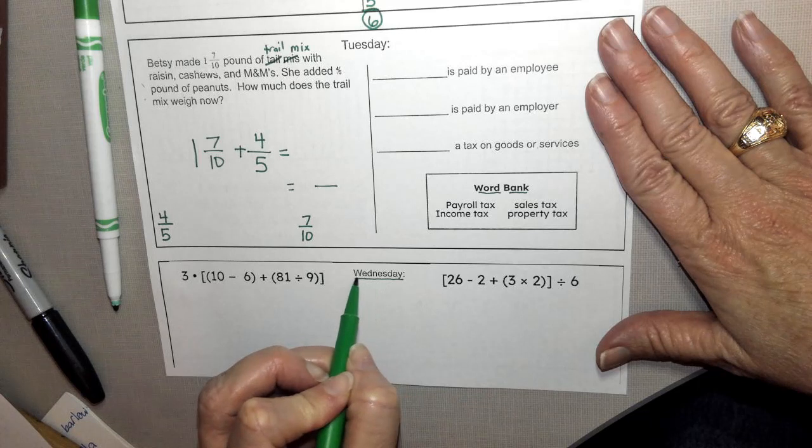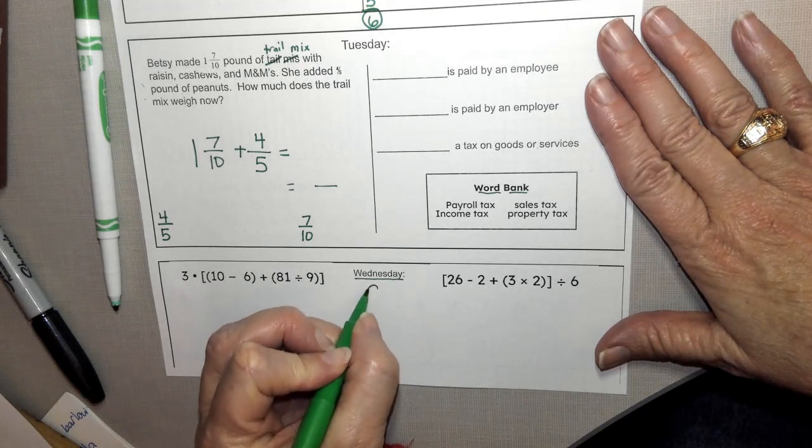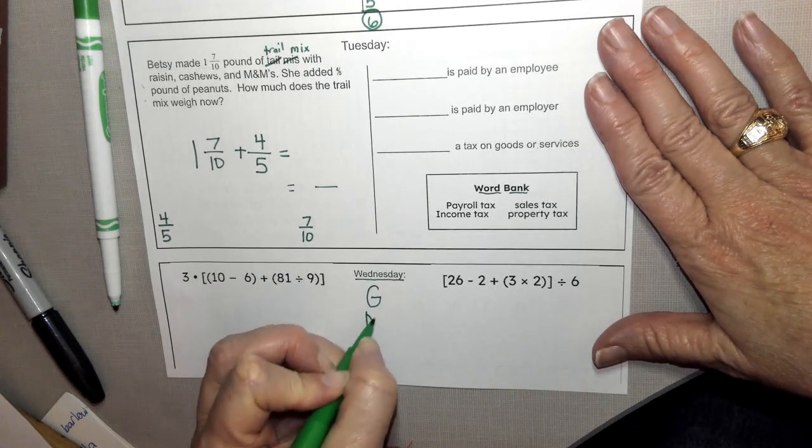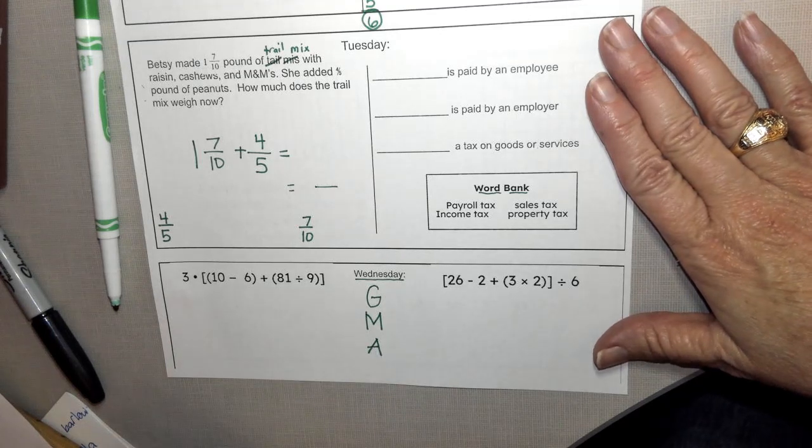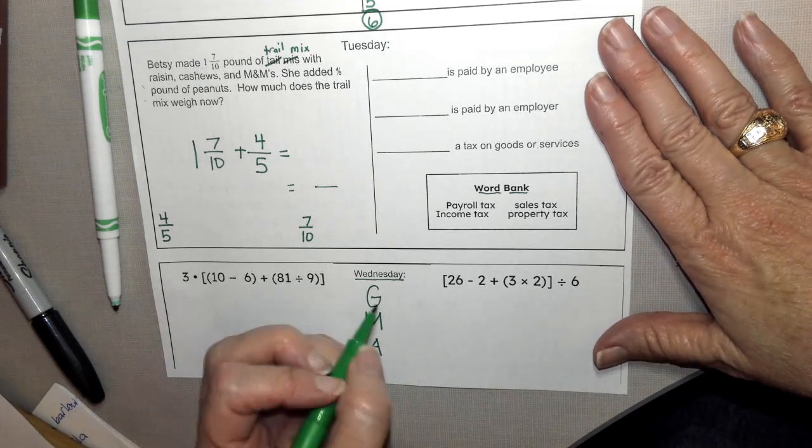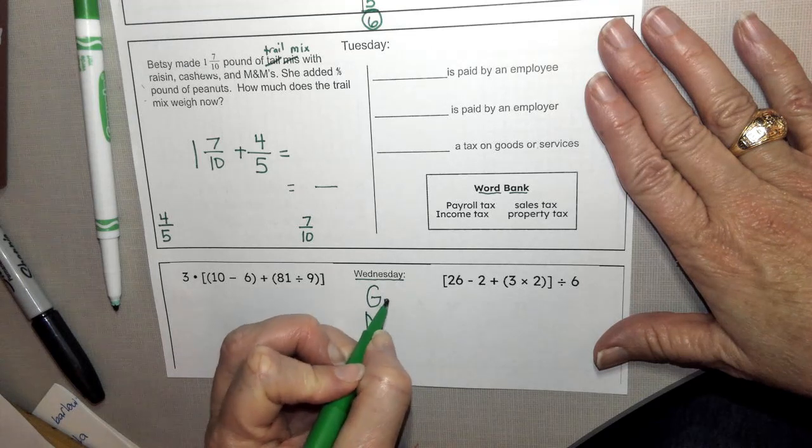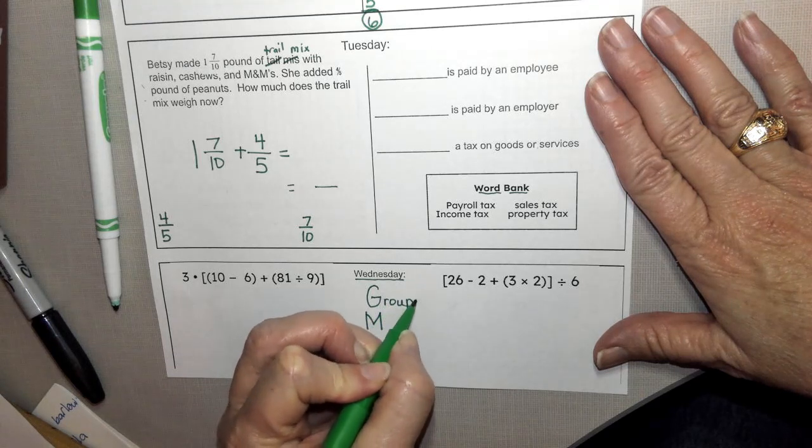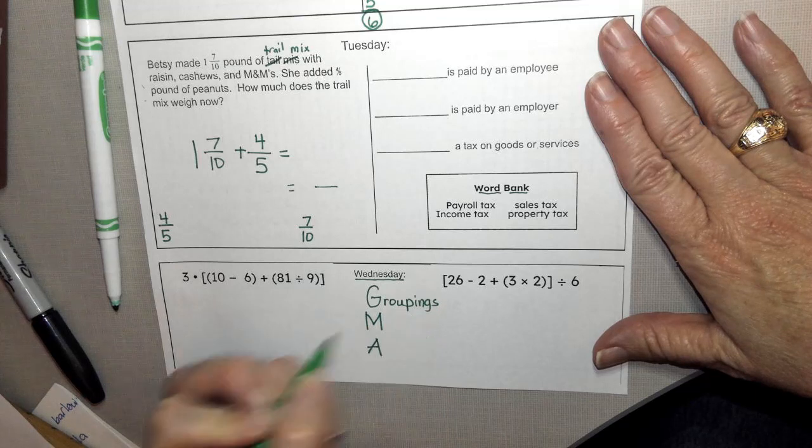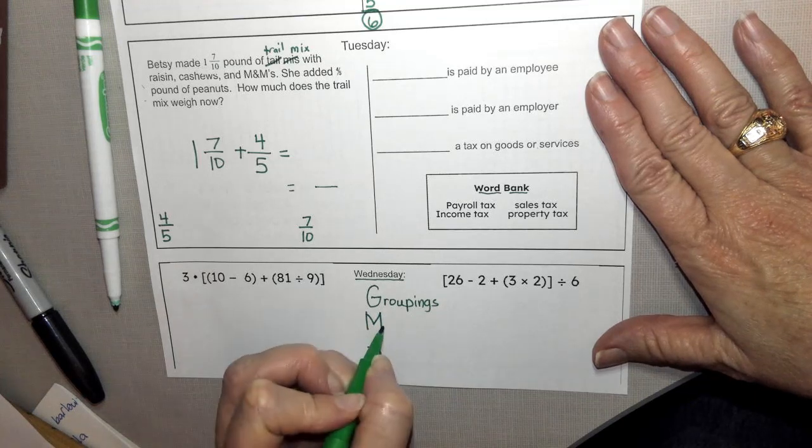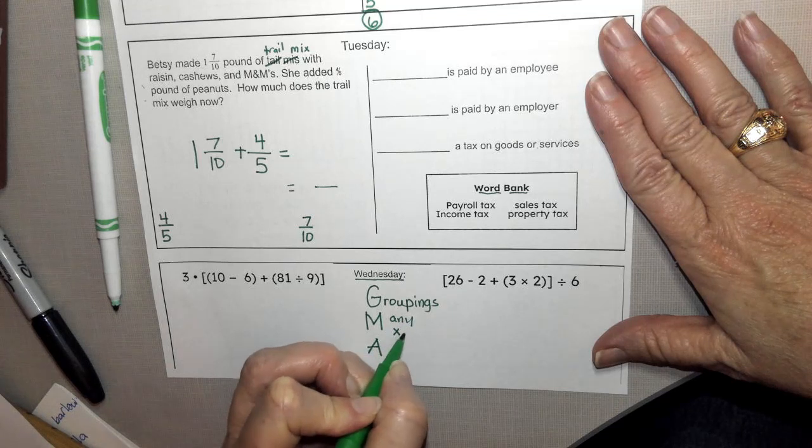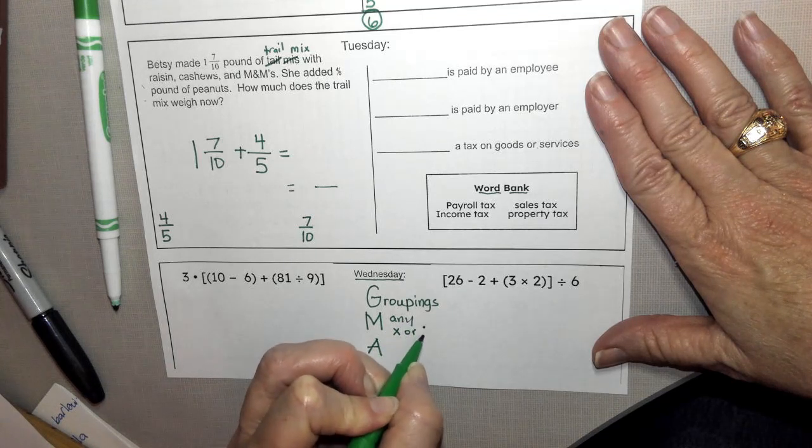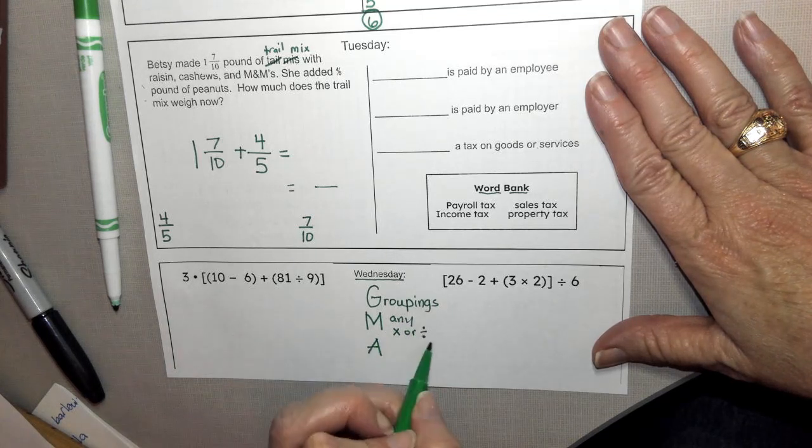All right, for Wednesday, we're going to do a little bit of GMA, and remember GMA stands for our grouping symbols, it stands for our multiplicatives, which would be any multiplying or dividing, whichever comes first from left to right.